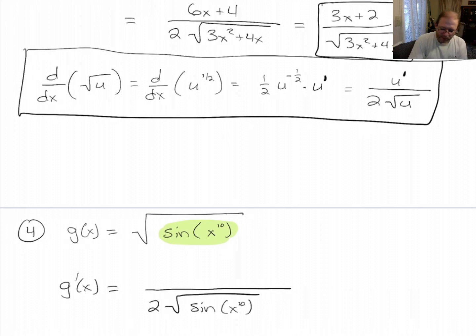So what I get down here is 2 square root of u. And on top, I've got to put the derivative of u. Derivative of sine of x to the 10. You know what? Maybe it's worth writing this in. Derivative of sine x to the 10.